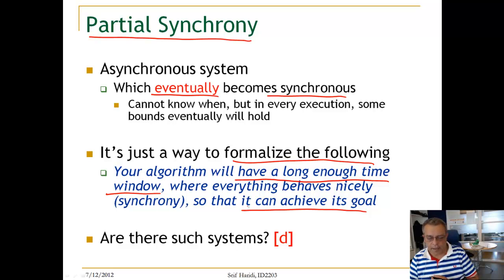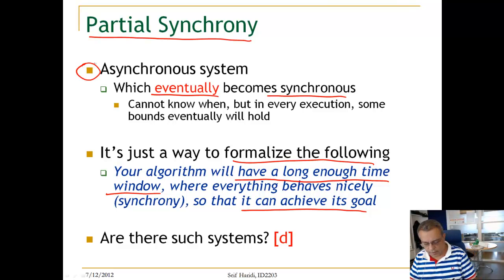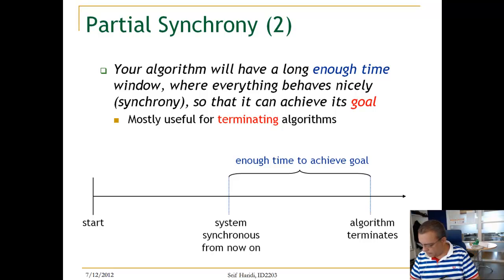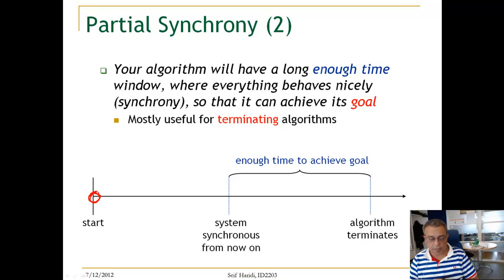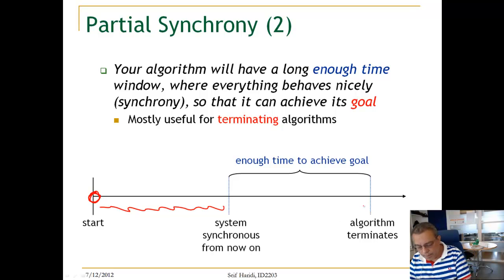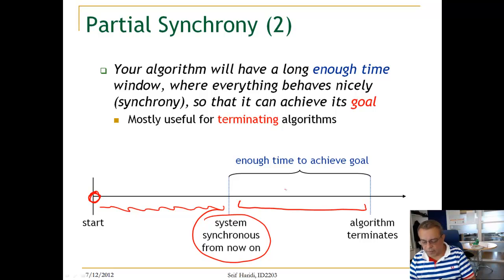We consider most internet-based systems to be systems that can be modeled as partially synchronous systems. In other words, your algorithm will have a long enough time window where everything behaves nicely. You start a session — it could be an agreement algorithm or a commit protocol — and initially we don't know, but there will be a time period where the system behaves synchronously from that point on. This time period is enough for the algorithm to achieve its goals and to terminate.